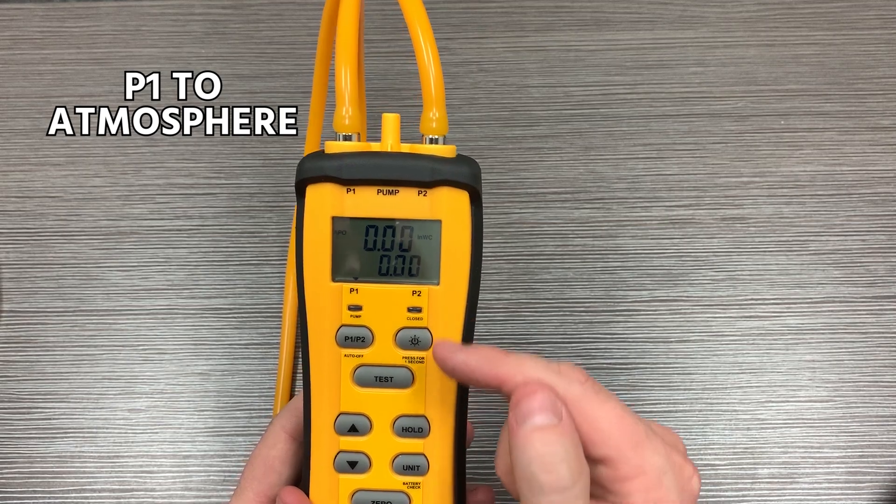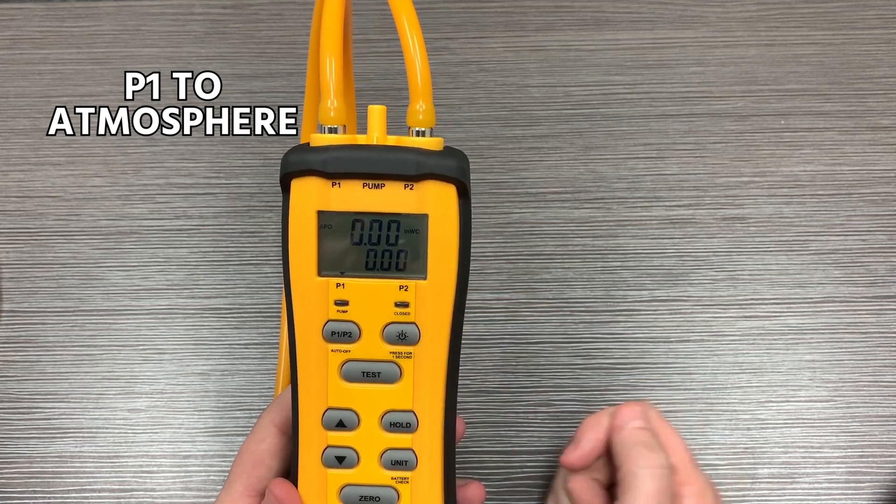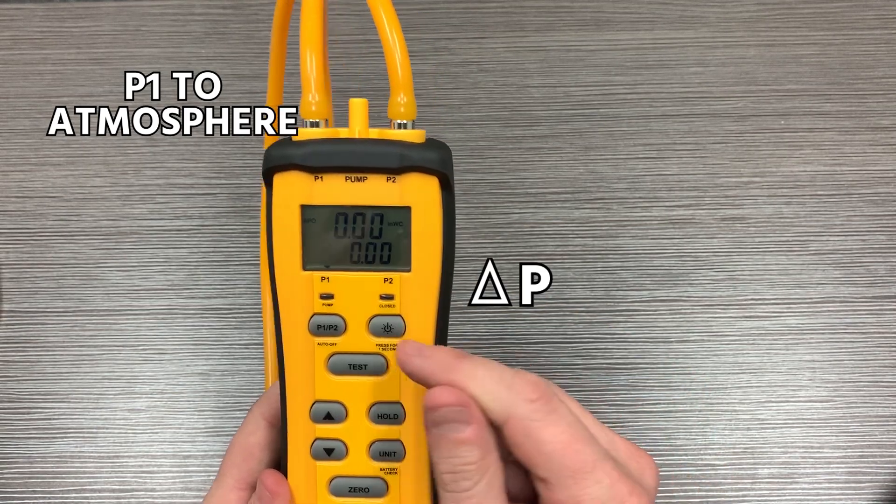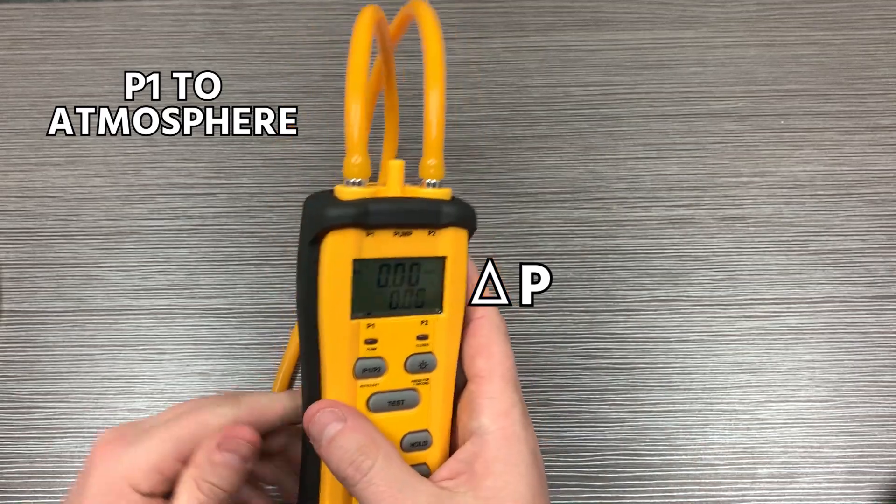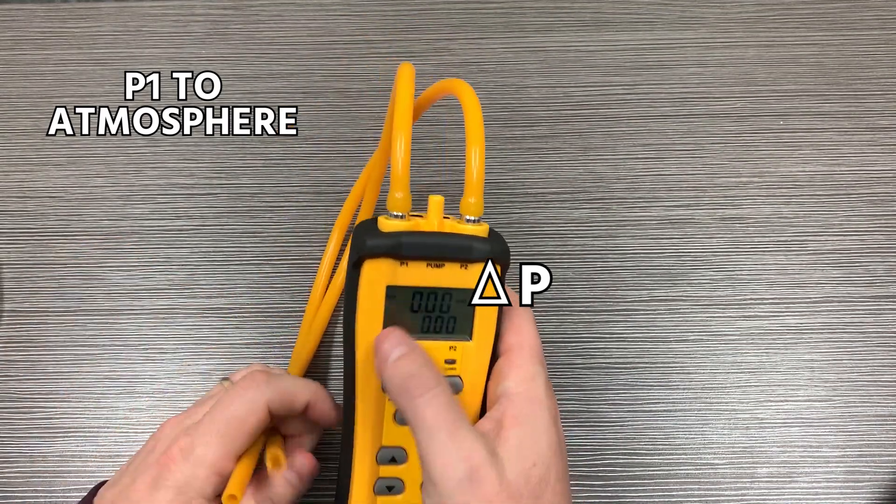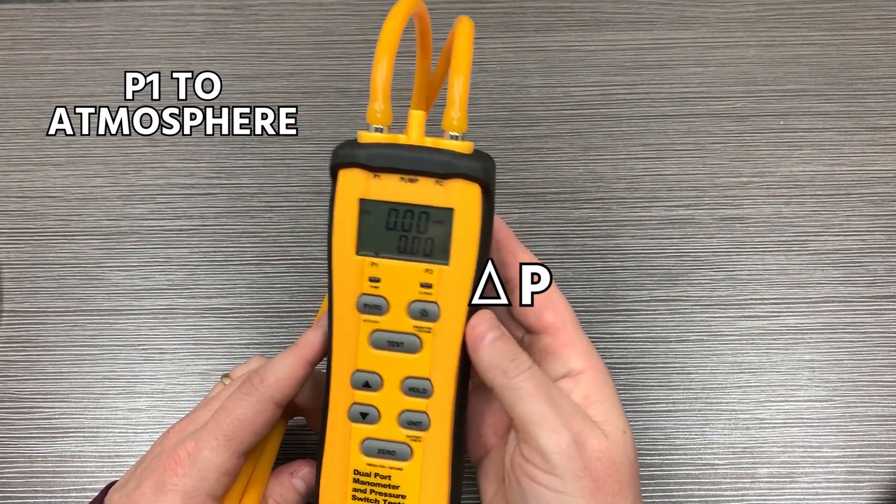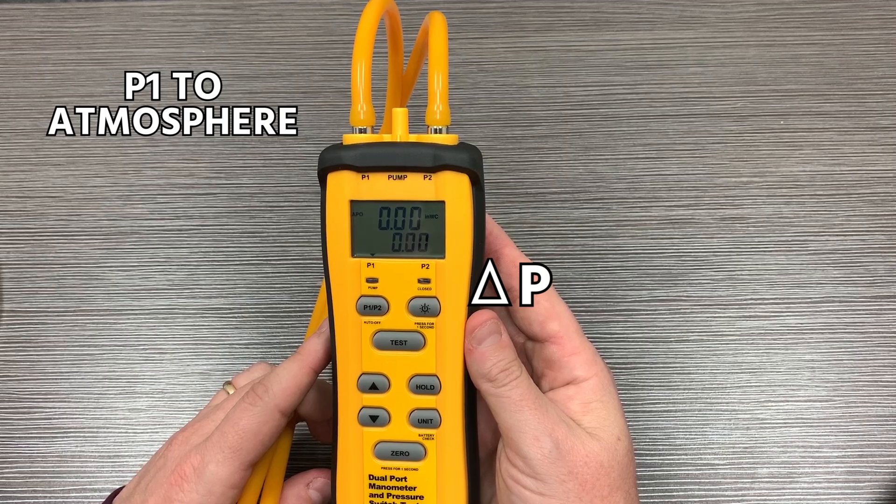P1 to atmosphere, and this smaller number here is our delta P. So this is going to show the difference between the two probes, and this is going to show just our one P1 probe to atmosphere.